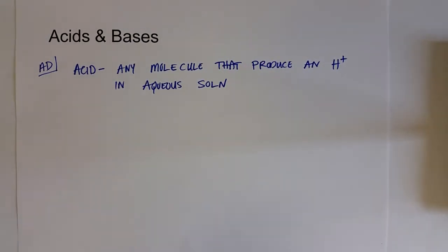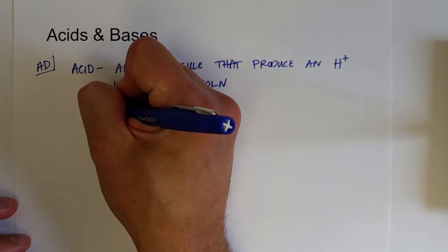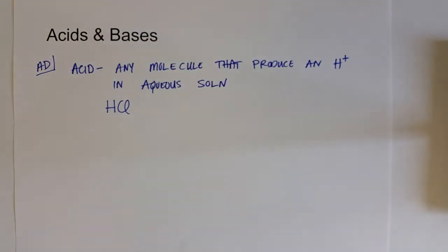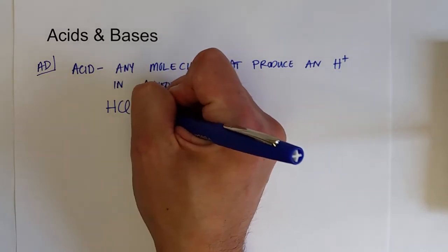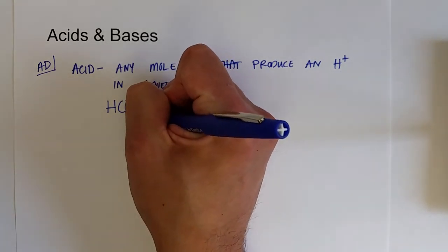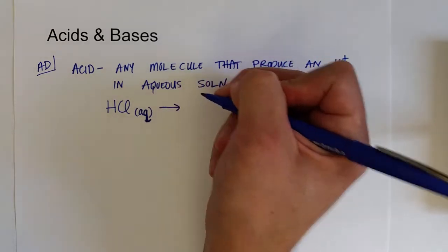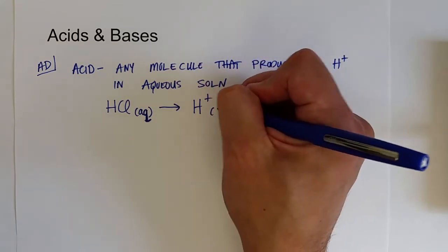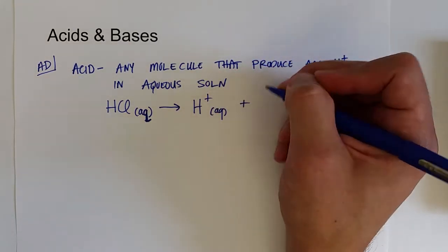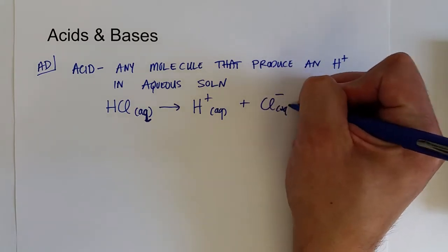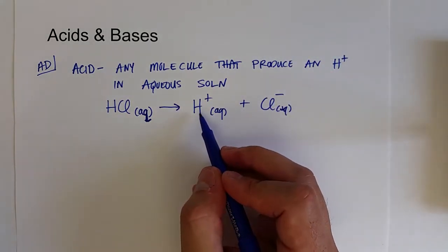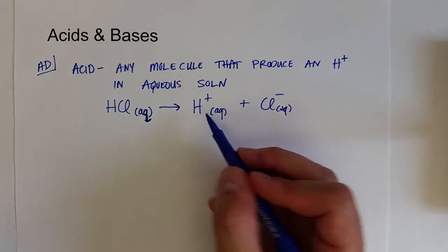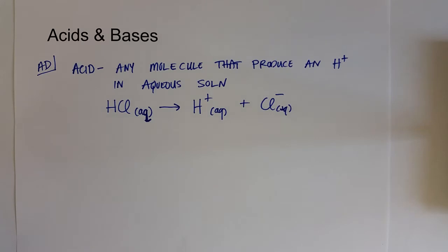An example of an acid for this definition would be hydrochloric acid, HCl. When you throw it into water it actually separates — just like ionic compounds did in solution — but since this is a molecule we call this process ionization. It ionizes to form an H-plus ion and the chloride ion. That H-plus ion can be involved in reactions which are called acidic properties, and that's essentially where the acid chemistry comes from.